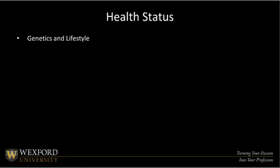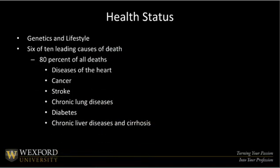In the United States, 6 of the 10 leading causes of death are listed in the bullet points below, and they probably aren't surprising for anyone. Maybe a little bit surprising to see that 80% of all deaths come from this particular grouping of 6, because when you think about the 6 that are on the screen before you, they are all what we call preventable. These are a little bit different than those that are non-preventable, like dying of natural causes or old age, or death from accidents.